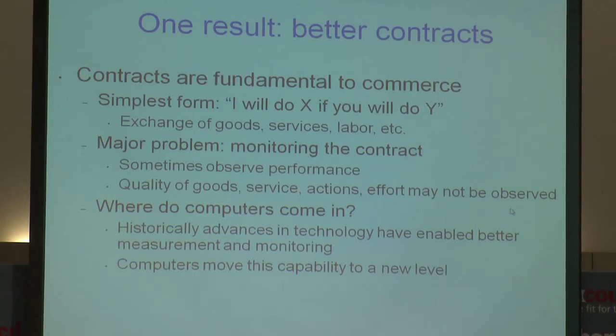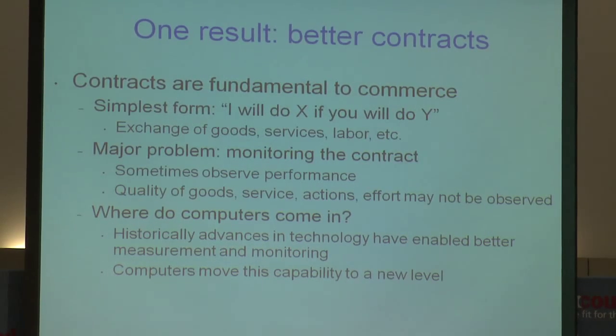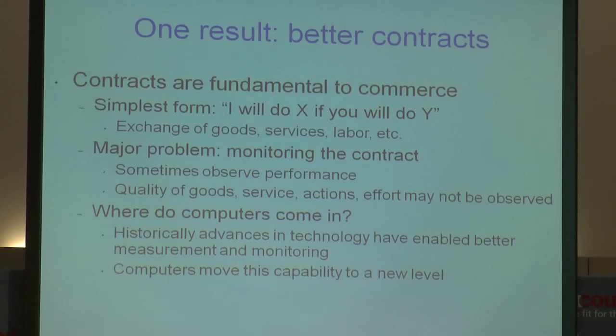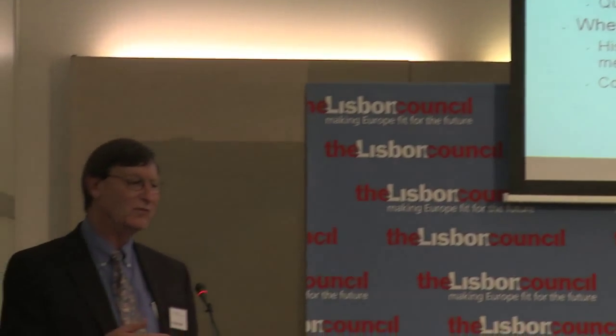The idea is that once you have computer-mediated contracts — or better technology for recording and observing transactions — you can write better contracts. A contract is really fundamental to commerce: I'll do X if you do Y. But the problem is you've got to actually monitor the contract. You have to verify that I've actually done X before you perform your part. Sometimes in a simple exchange it's easy to observe performance, but in other cases the quality of the good, service, or effort may not be easily observable, making it much more difficult to enforce the contract. Computers enable better measurement and monitoring and therefore enable better and more efficient contracts.